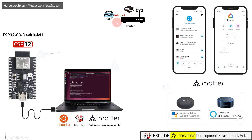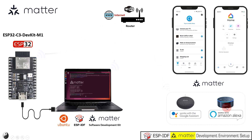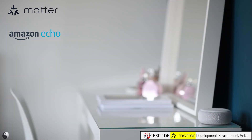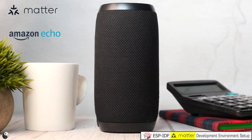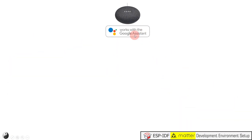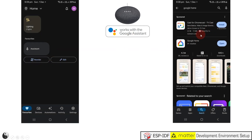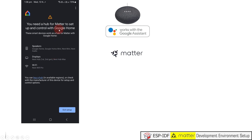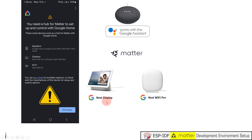Please note: even if you do not have smart speakers like Amazon Echo Dot or Google Home Mini, you can still perform this experiment — there is a workaround. In the case of Alexa, to set up, control, and commission Matter devices using the Amazon Alexa app, Matter-enabled hub devices like Echo Dot or Echo Flex are mandatory. For Google, the default Google Home app from the Play Store or App Store shows a message requiring a hub for Matter. Smart devices like Google Home Mini, Nest Hub Display, or Nest Wi-Fi Pro act as a Matter Hub for Google Home.